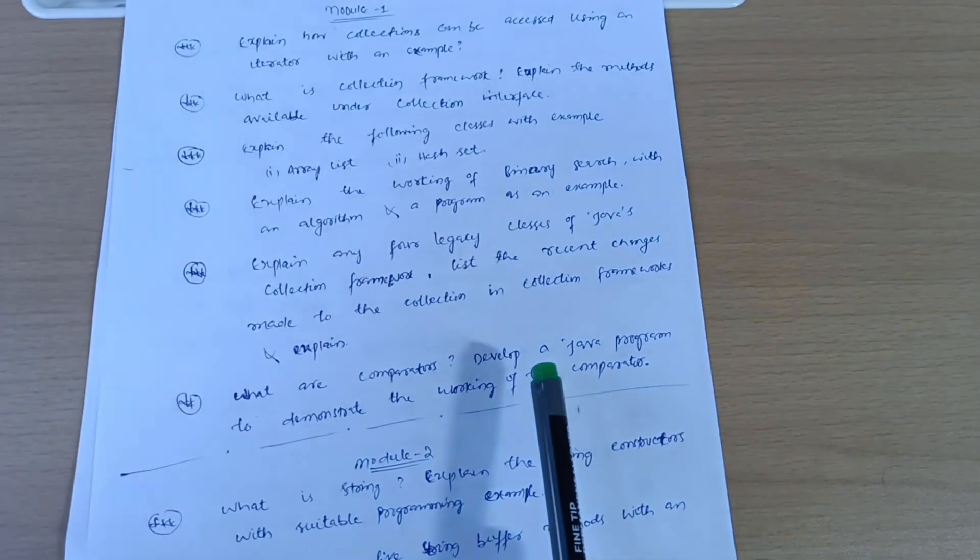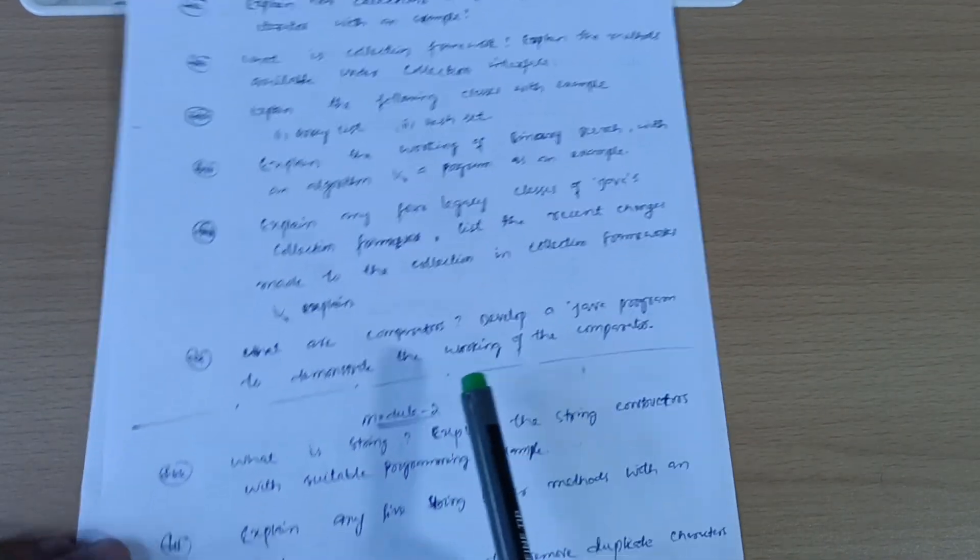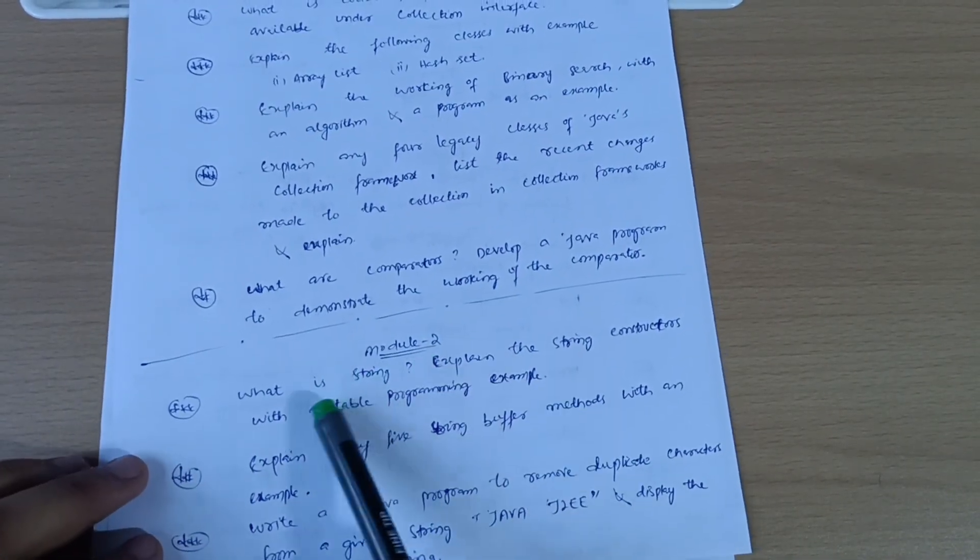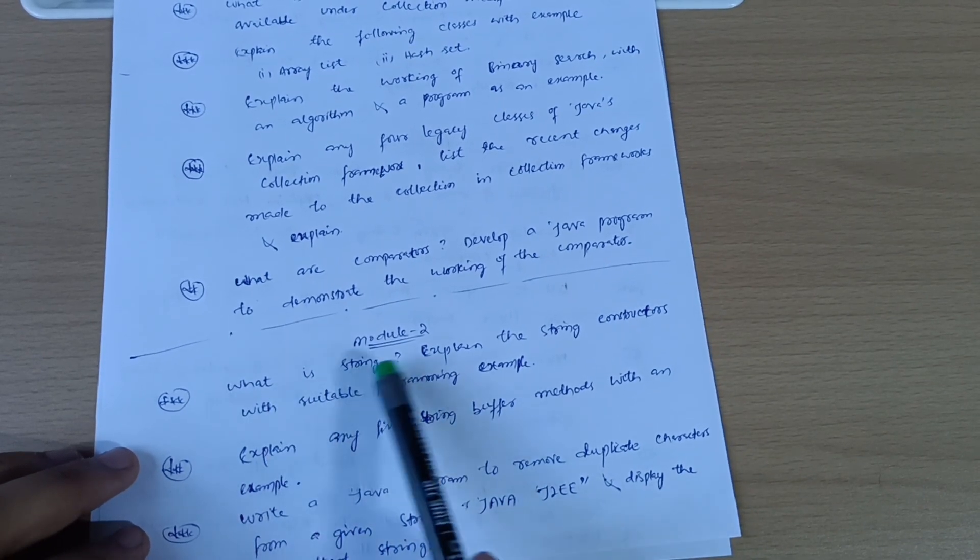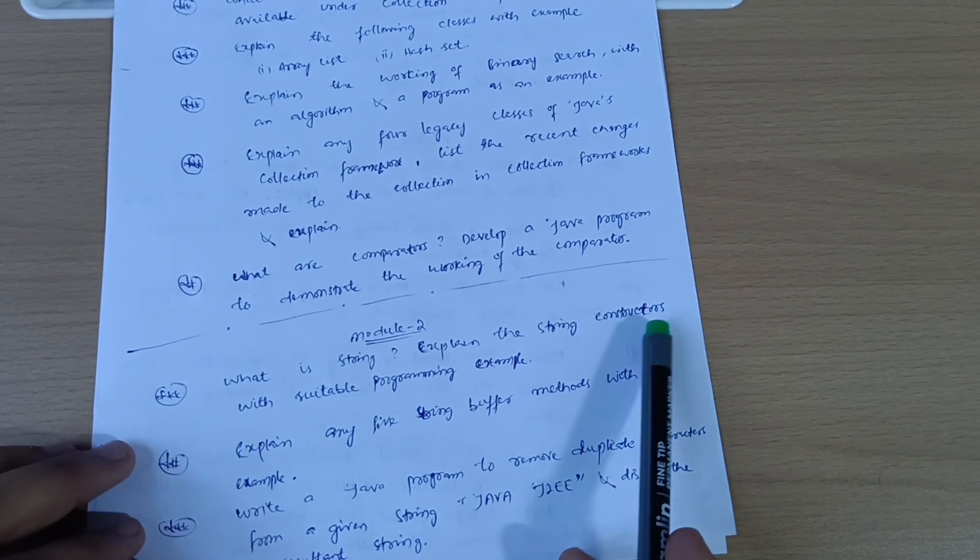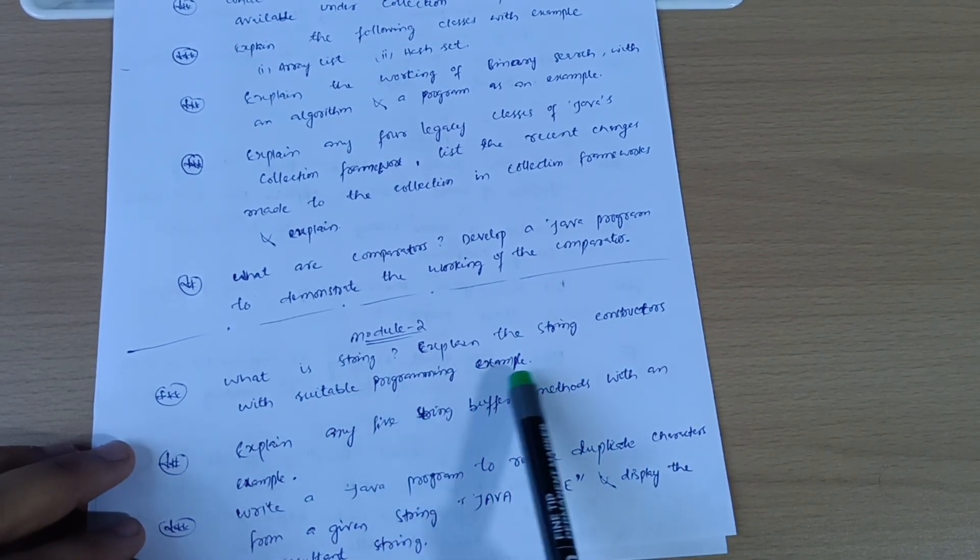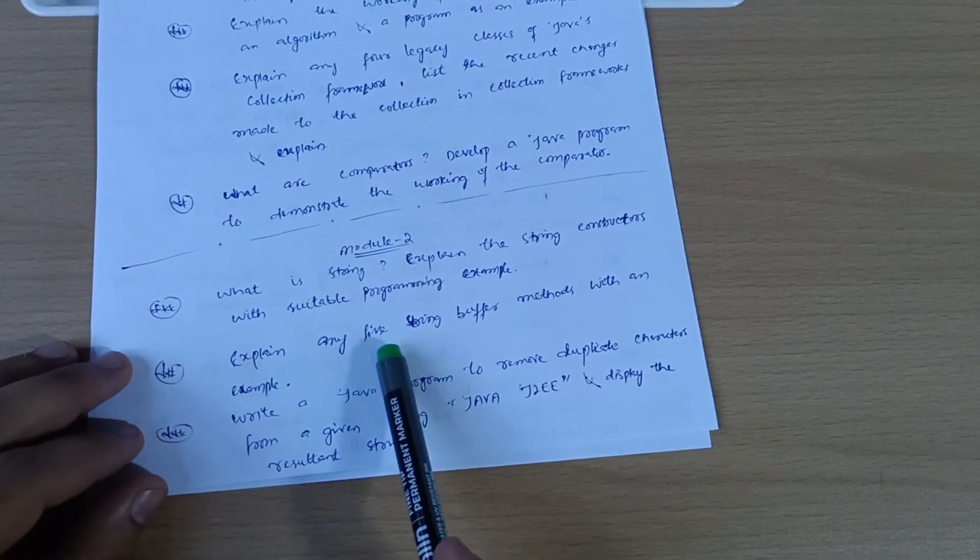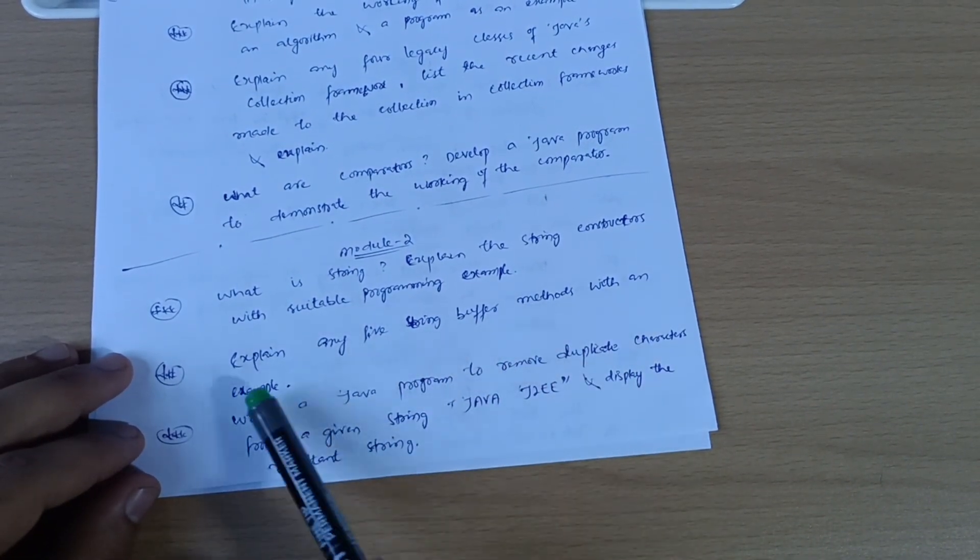These are the super important questions from model first. Now, model two is here where we have: what is string? Explain the string constructors with a suitable programming example. Explain any five string buffer methods with an example.